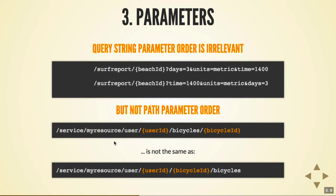The query string parameter order is totally irrelevant. If you had days equal 3, units equal metrics, and time equal 1400, it's the same as time equal 1400 first and so forth. But you couldn't swap the path parameter order — you couldn't throw the bicycle ID before bicycles. It's very exacting about what's allowed and what's not.